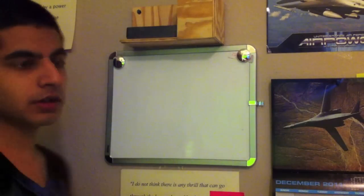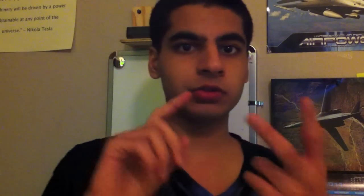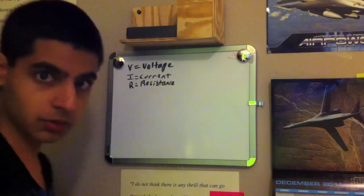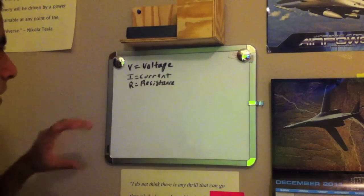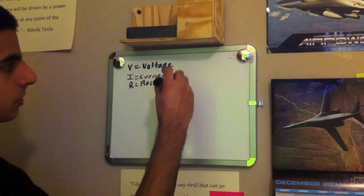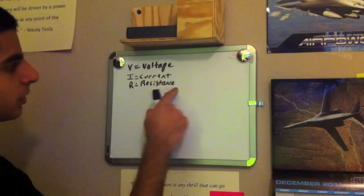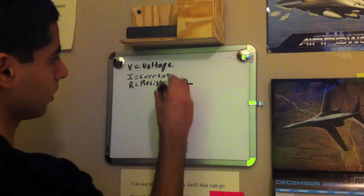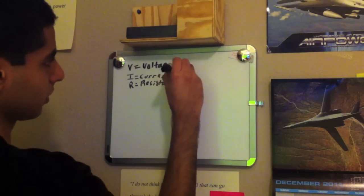So, Ohm's Law simply states the relationship between voltage, resistance, and current. These are the three things we're going to use: voltage is measured in volts, current is measured in amps, and resistance is measured in ohms, which is the symbol omega. Current is just an A, and voltage is just a V.